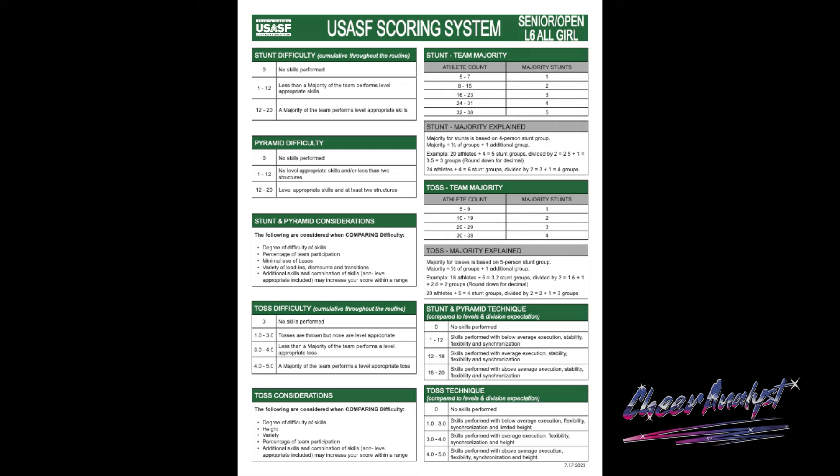When a team is performing, there's a judging panel. The judging panel has a judge for each section that's going to dictate the difficulty. Their only job is to count every single element in the stunt section or in the tumbling section, and then they give the team the difficulty score. You have another judge on that same category whose job is only to look at execution.